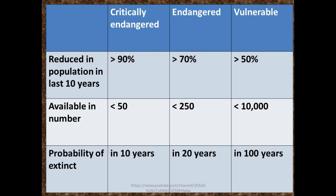The criteria for these categories are based on reduction in population over the last 10 years, current availability in number, and probability of extinction. Critically endangered: reduced more than 90% in last 10 years, fewer than 50 individuals remaining, probability of extinction within 10 years. Endangered: reduced 70% in last 10 years, fewer than 250 individuals, extinction probable within 20 years. Vulnerable: reduced 50% in last 10 years, fewer than 10,000 individuals, extinction probable within 100 years if measures are not taken.